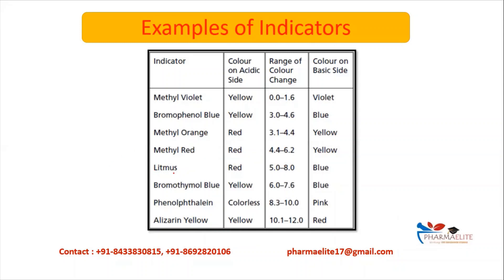Continuing the indicator table: Litmus — red in acid, blue in base, range 5–8. Bromothymol blue — yellow in acid, blue in base, range 6–7.6. Phenolphthalein — colorless in acid, pink in base, range 8.3–10. Alizarin yellow — yellow in acid, red in base, range 10.1–12. Indicators are selected according to the analyte and the relevant range of color change.